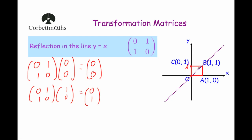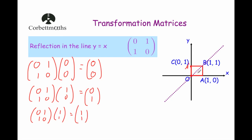So A has been reflected in the line y equals x. Next, point B, which is the point (1, 1). We take the matrix [0, 1, 1, 0] and multiply it by (1, 1). We get 0 times 1 is 0, plus 1 times 1 is 1, adding them gives 1. And the second row: 1 times 1 is 1, plus 0 times 0 is 0, adding them gives 1. So point B will stay where it is — B dash is invariant.